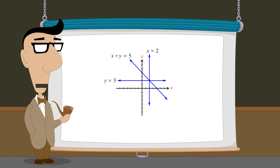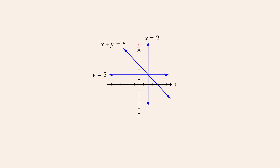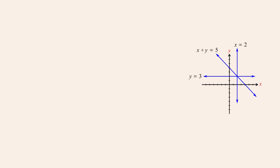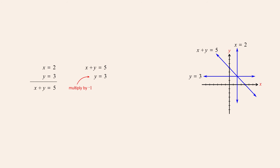So let's take a look at a dependent system of three linear equations in two variables. The three equations in this system are all dependent. Each equation can be derived by multiplying the other two equations by constants and then adding the results. For instance, adding one times the equation x equals two to one times the equation y equals three produces the equation x plus y equals five. Likewise, adding one times the equation x plus y equals five to negative one times the equation y equals three produces the equation x equals two.